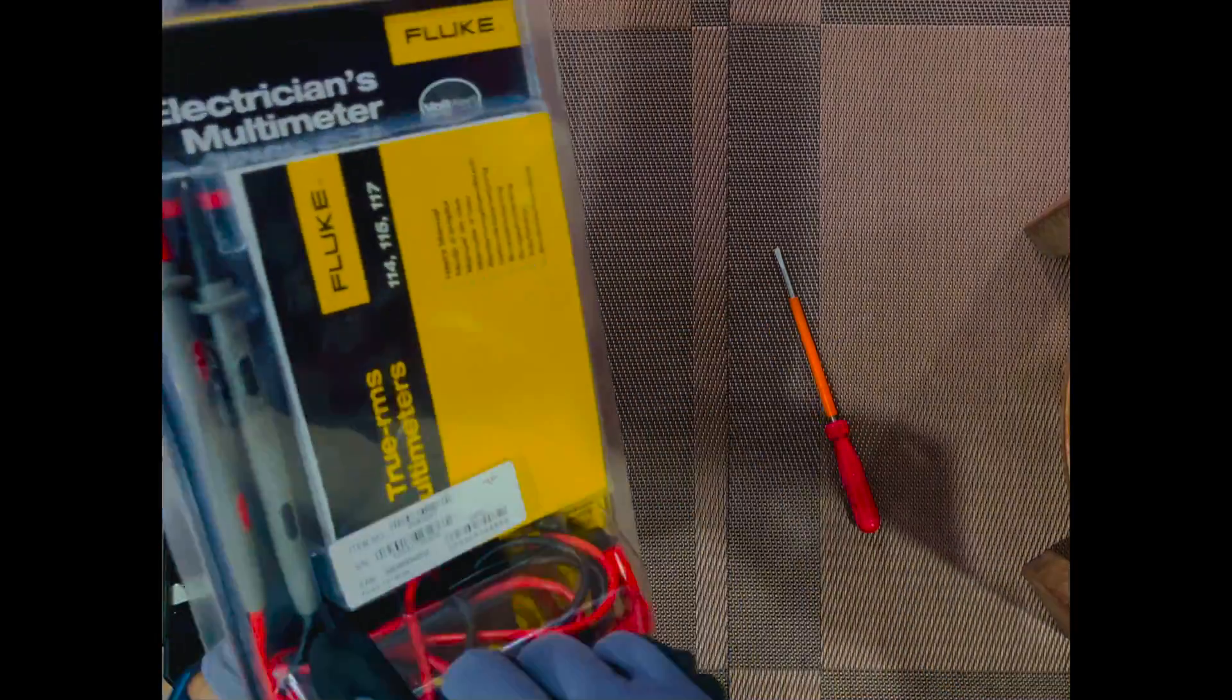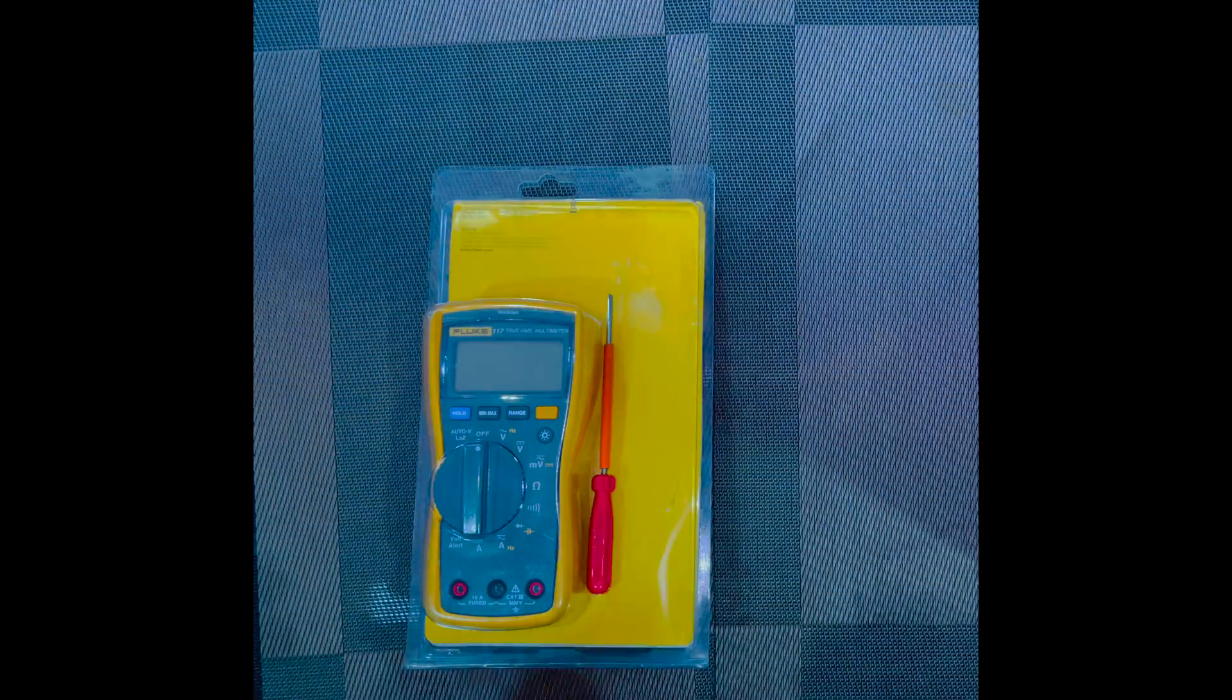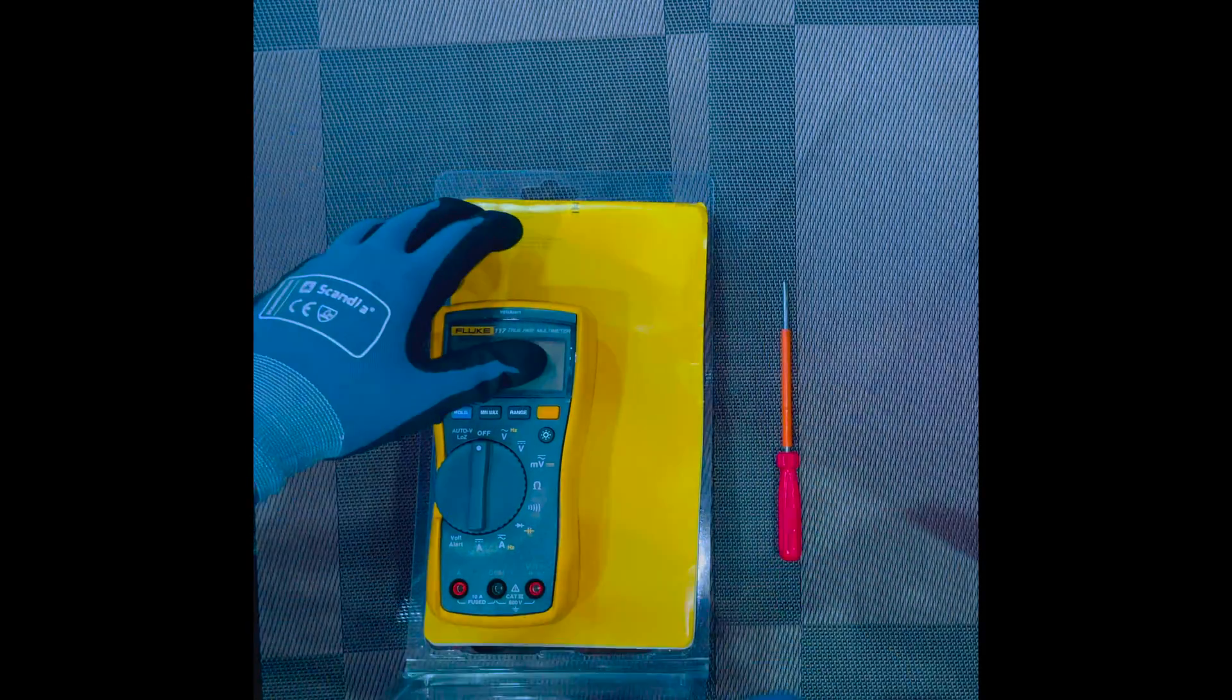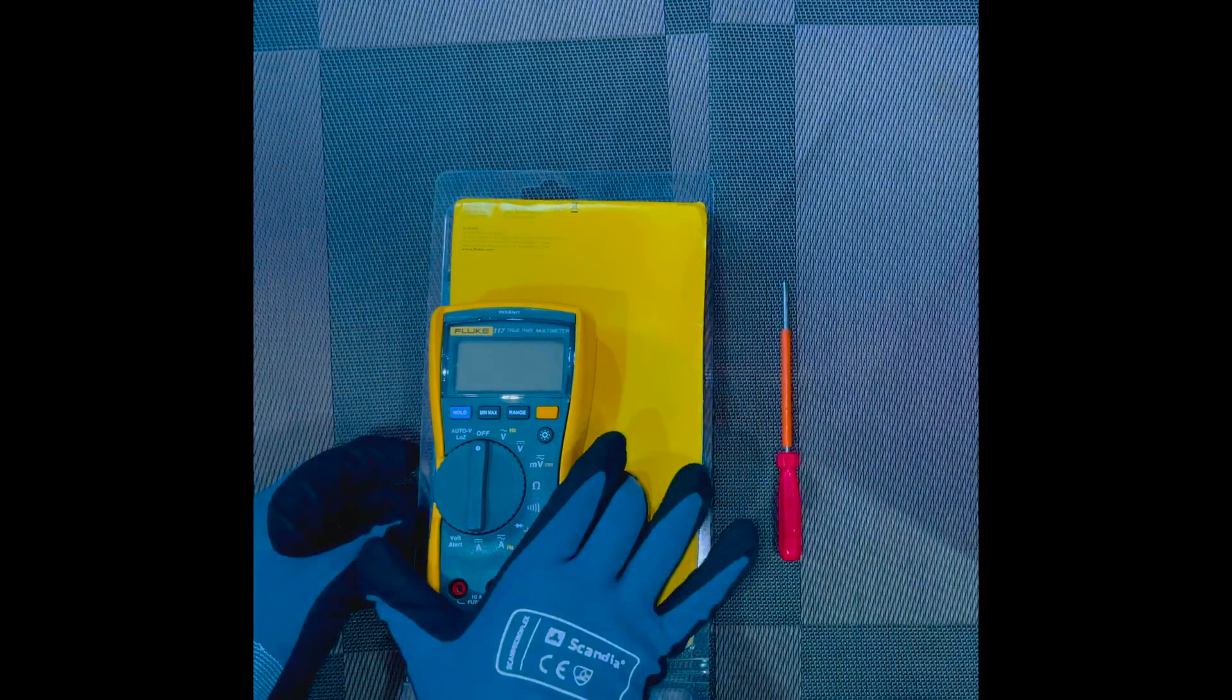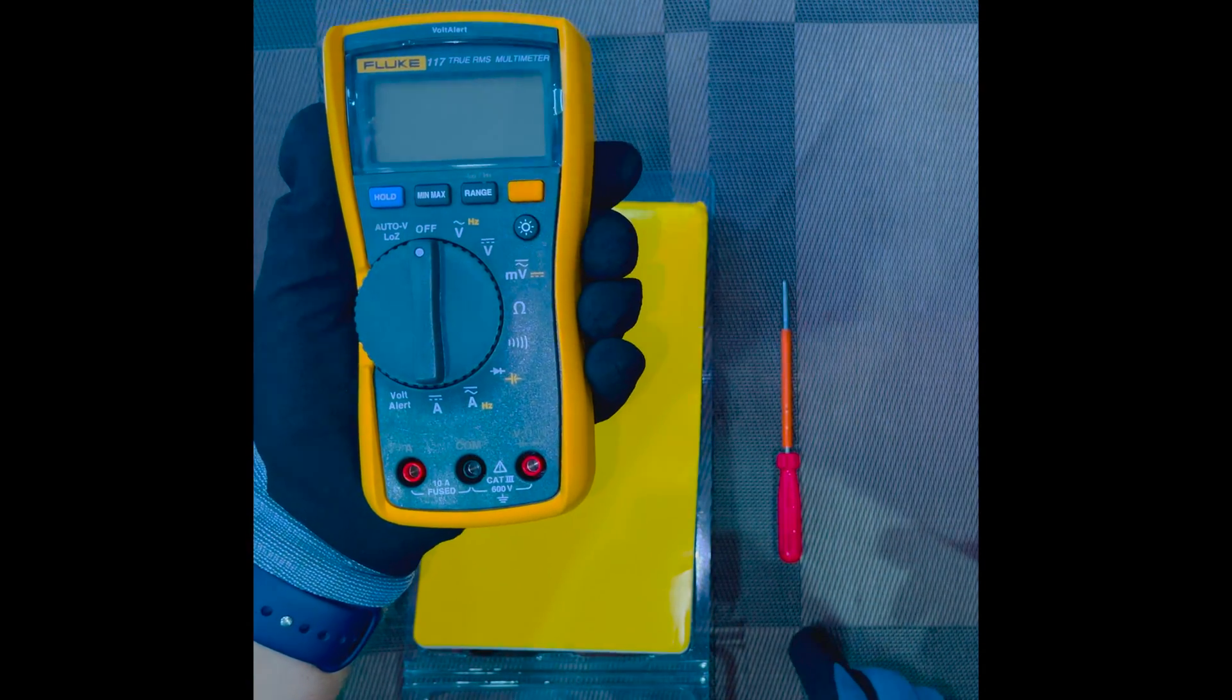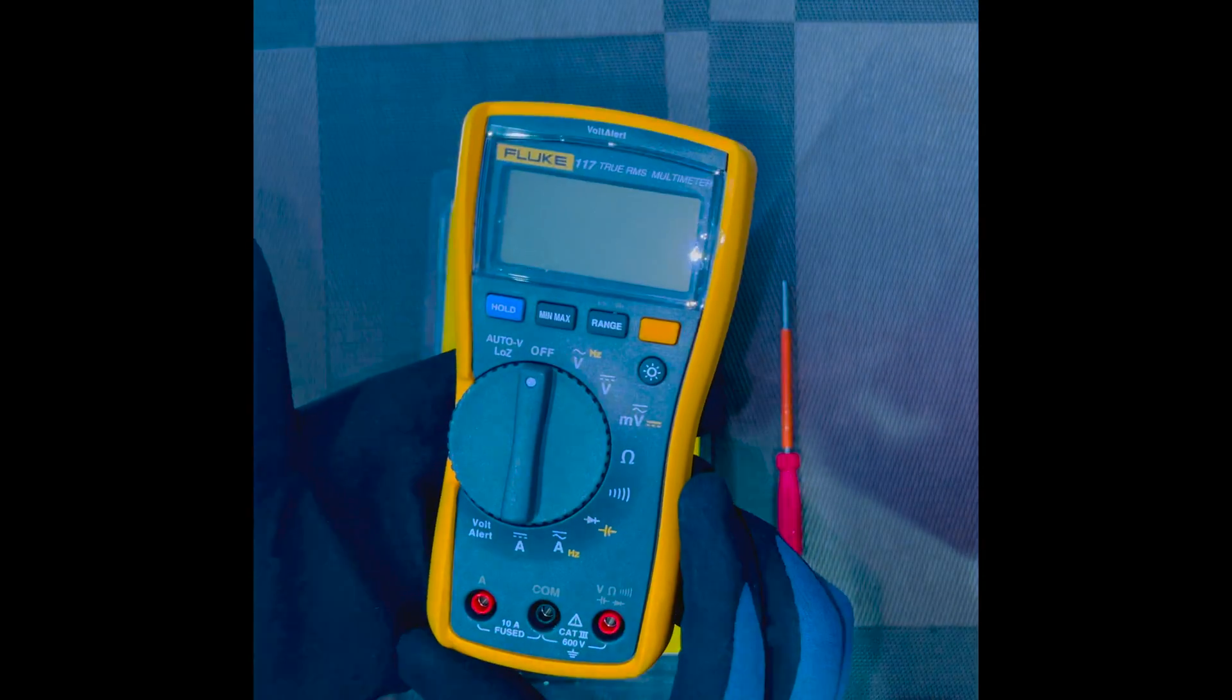On the back side of the multimeter you see there's one manual, and there are two probes set of probes which are packed inside. A multimeter is a meter which we use in order to measure and simulate loop characteristics such as voltage, current, and resistance within these circuits.